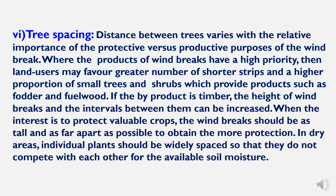The sixth characteristic is tree spacing. Distance between trees varies with the relative importance of protective versus productive purposes of the windbreak. Where products of windbreaks have high priority, land users may favor a greater number of shorter strips and a higher proportion of small trees and shrubs providing fodder and fuel wood. If the by-product is timber, the height of windbreaks and intervals between them can be increased. In dry areas, individual plants should be widely spaced so they do not compete for available soil moisture.